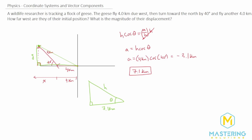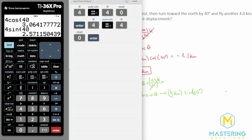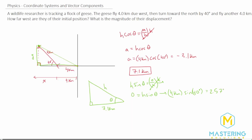Going back to the second leg, we want to find the opposite side, so we'll use sine. Sine of theta equals opposite over hypotenuse. Multiplying both sides by h gives us opposite equals h times sine of theta. With h equal to 4 kilometers and theta equal to 40 degrees, we get 4 times sine of 40°, which gives us 2.571 kilometers.